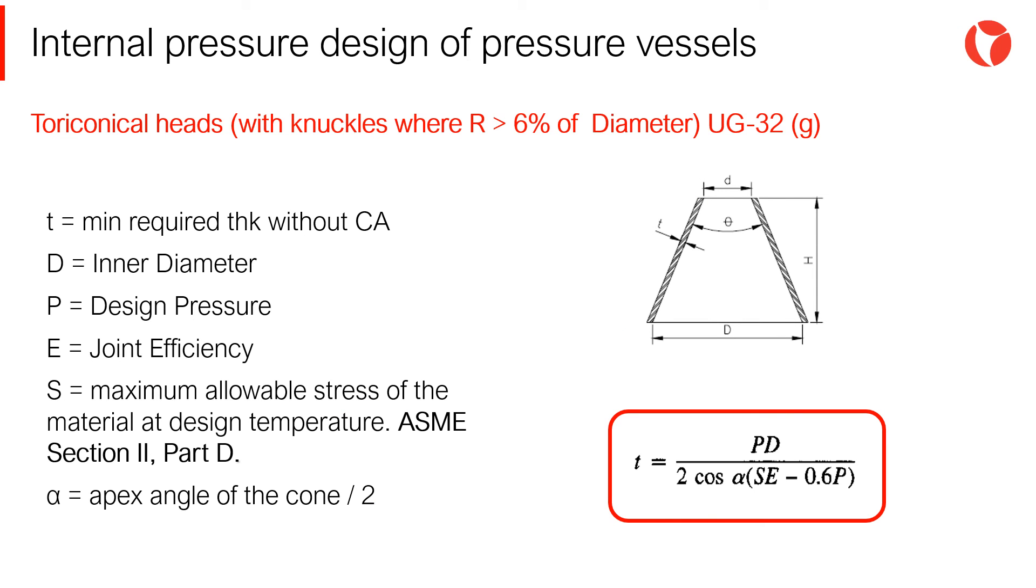As mentioned before, in order to avoid stress concentration effects in cone-to-shell junctions, in pressure vessels operating at high pressure or with heavy axial loads, conical transitions with knuckles are used. These transitions are called torriconical.